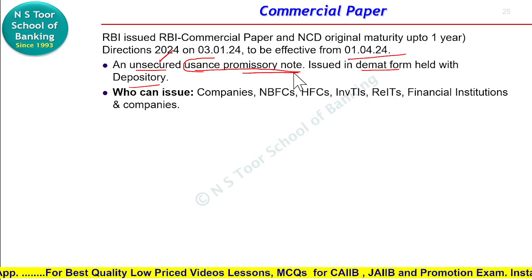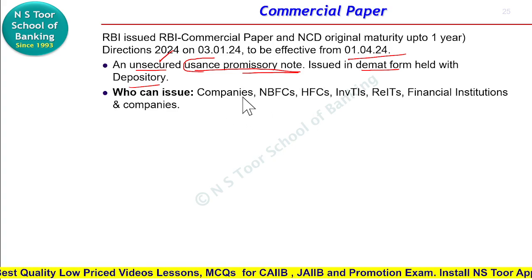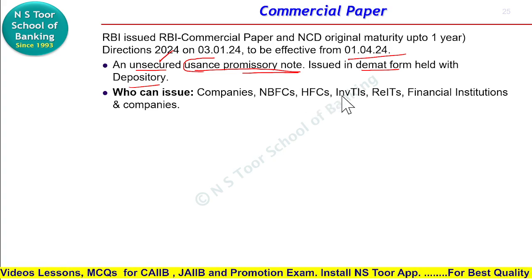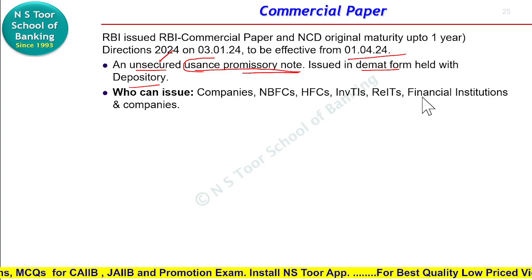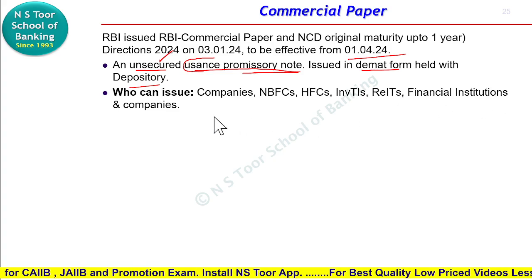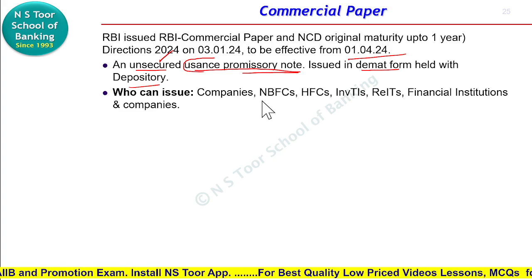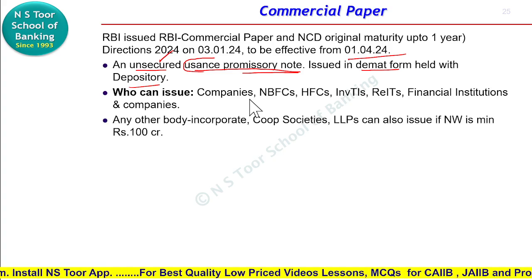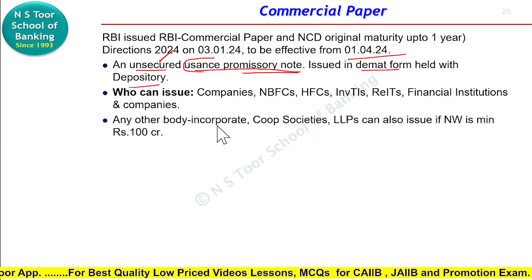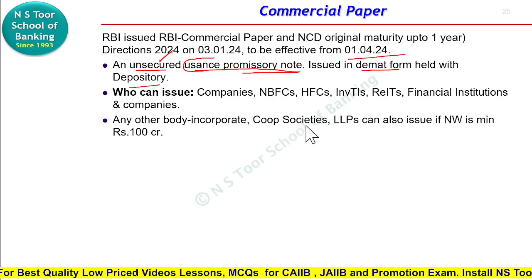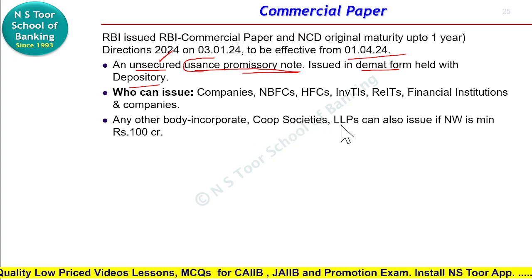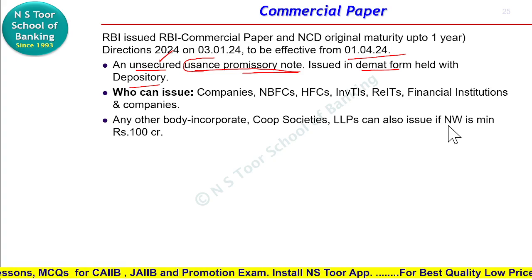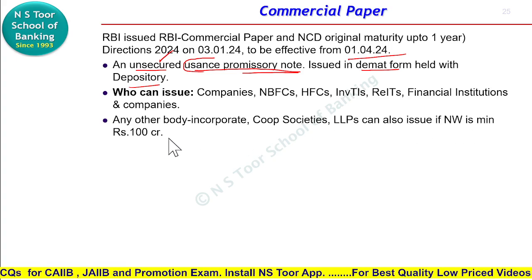Ab in guidelines ke mutabik commercial paper ko issue kaun kar sakta hai? Commercial paper can be issued by companies, non-bank finance companies, housing finance companies, financial institutions, and other companies. Iske alava koi bhi doosra body corporate, cooperative societies, ya limited liability partners — ye bhi commercial paper issue kar sakte hain, provided inka jo net worth hai wo minimum 100 crore hona chahiye.